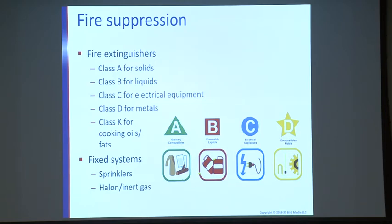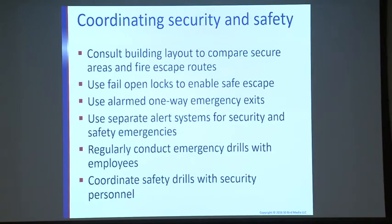When fires involve electricity, the distribution box where power enters the building is typically where fires start, as someone has drawn too many amps from one breaker. For coordinating building security and safety: consult the building layout to compare security areas and fire escape routes. Use fail-open locks to enable safe escapes — people should be able to push a bar and exit. Use alarmed one-way emergency exits.